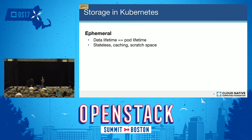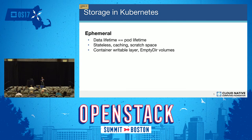Ways to use ephemeral storage in Kubernetes today — you can access it through two different layers: through the container layer via the writable layer, or at the pod level through emptyDir volumes, which let you share ephemeral storage between containers in a pod.